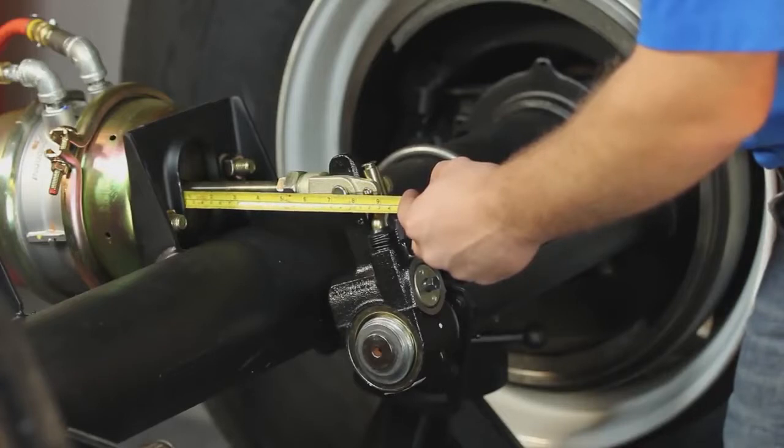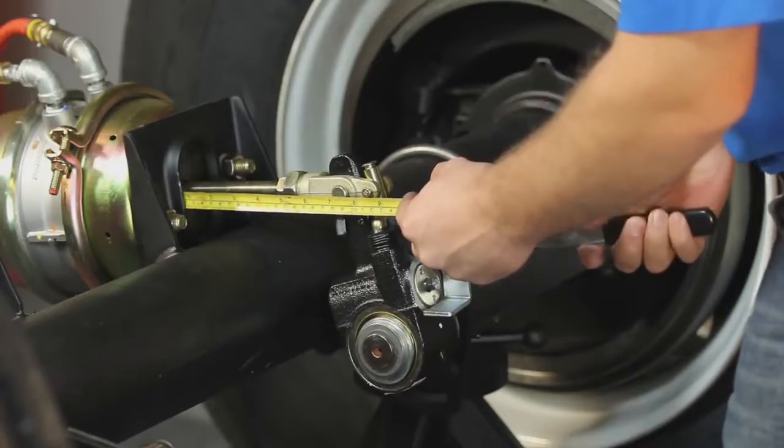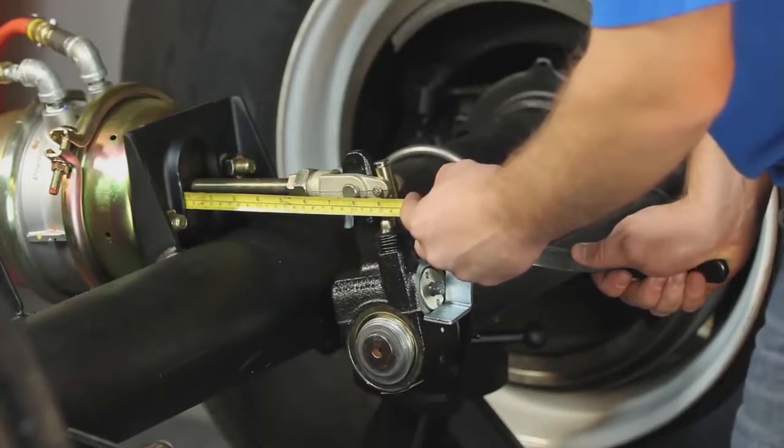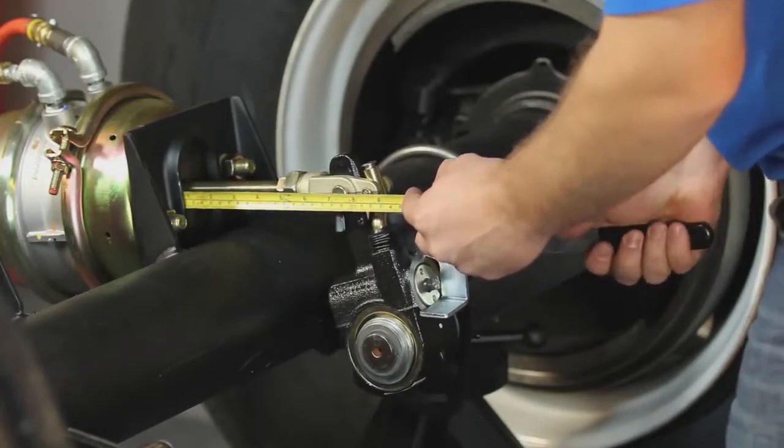Free stroke is the amount of movement the slack adjuster arm requires to press the brake shoes against the drum. With the brakes released, measure from the face of the air chamber to the center of the large clevis pin.